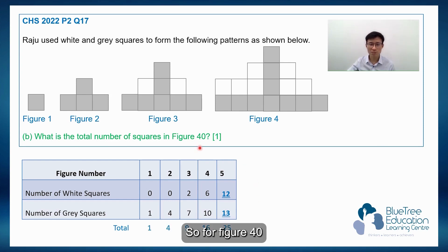So for figure 40, it only equals 40 times 40, which is 1,600.